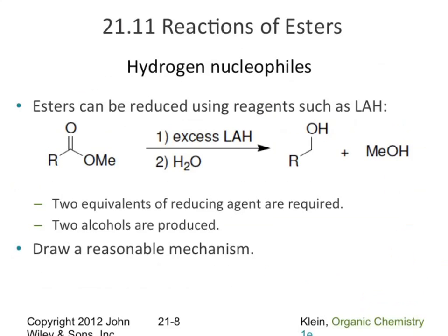We can also react esters with hydrogen nucleophiles — specifically lithium aluminum hydride (LiAlH4), a good source of hydride and a good reducing agent. We can take our ester all the way down to an alcohol using LiAlH4, just as we've seen with other carbonyl compounds. We need two equivalents because it's two reductive steps — we start with three oxygen bonds and end with one.